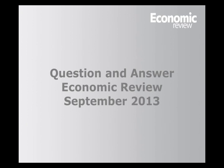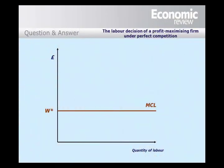First, let me explain how firms take decisions about the employment level in a perfectly competitive labor market — in other words, a market where the firm has no control or influence over the wage. Here we see a profit-maximizing firm under perfect competition. The firm can hire as much labor as it likes at the going wage rate W*, and the marginal cost of labor is thus horizontal at that level W*.